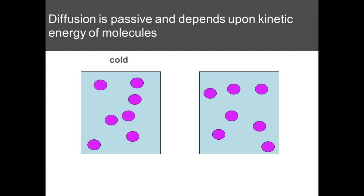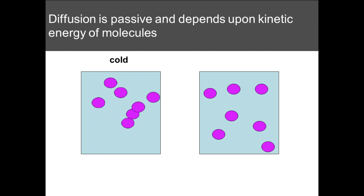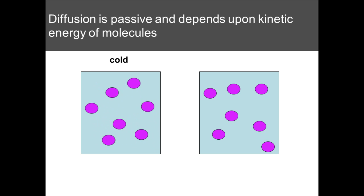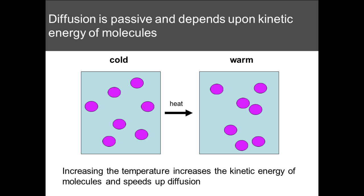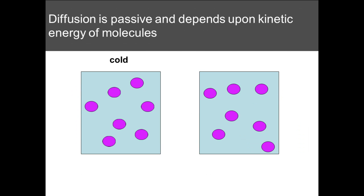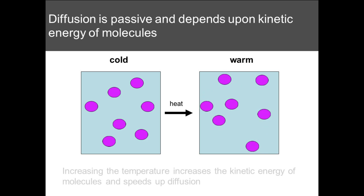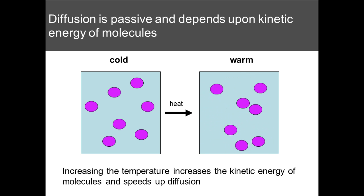The warmer the molecules are — the more heat they are exposed to — the quicker they move. You can see that in the cold example the molecules are moving, but not too quickly. If you apply heat, they move at a much greater speed, they have greater kinetic energy, and this speeds up diffusion. For example, if you were cooking a meal downstairs in summer versus winter, you would expect the smell particles to travel more quickly in summer because the particles have more energy.